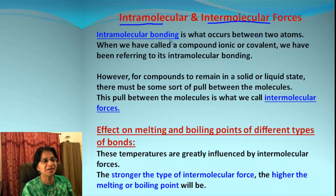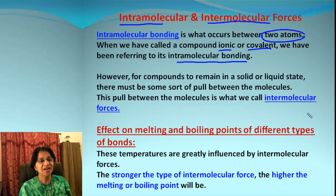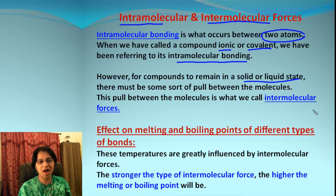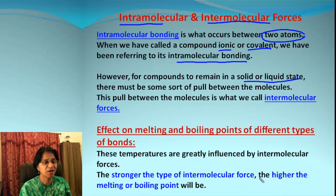When we use the word intramolecular bonding, that is between two atoms. When we say a compound is ionic or covalent, we are actually referring to intramolecular bonding. If a compound has to remain in solid or liquid state, there should be some sort of pull among those molecules, and that pull we call Intermolecular Forces. Since these IMFs hold the molecules together, they also have an effect on melting and boiling point. The simple way to remember is: stronger the intermolecular force, higher is the melting point and boiling point.